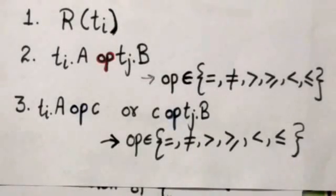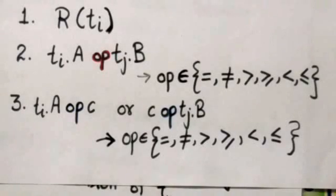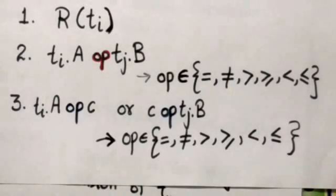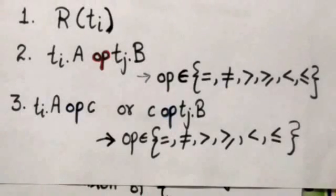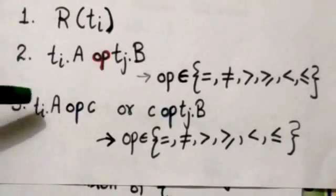The second type is an atom of the form ti.A op tj.B, where ti and tj are tuple variables, A is an attribute of the range relation of ti, and B is an attribute of the range relation of tj.